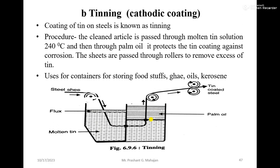Palm oil is used for better adhesion of tin and for protection of the metal from further corrosion. The sheets are passed through rollers to remove excess tin and to get an even coating. Tin-coated products are used as containers for storing food, ghee, oil, and kerosene.